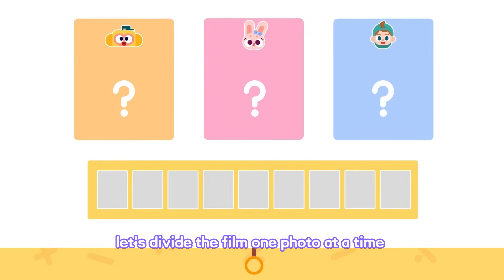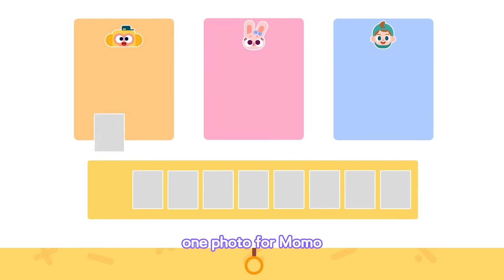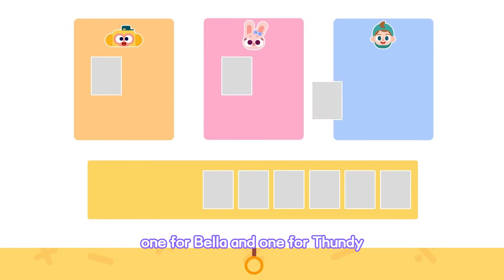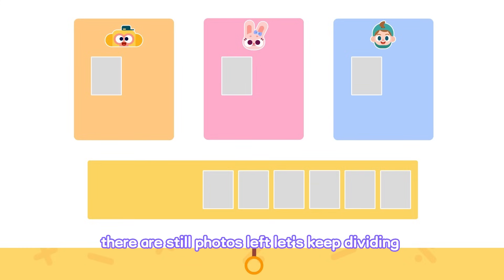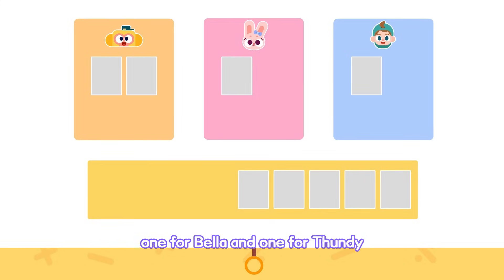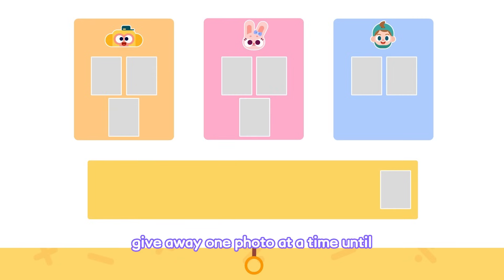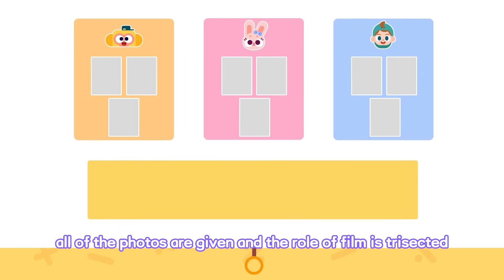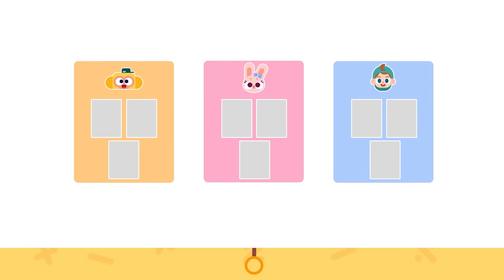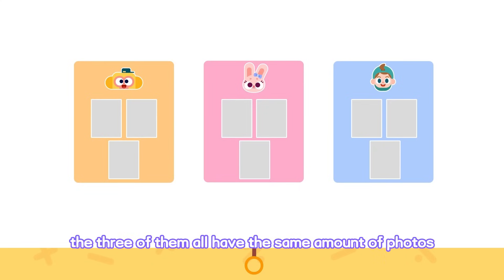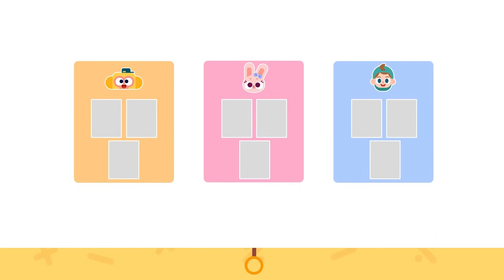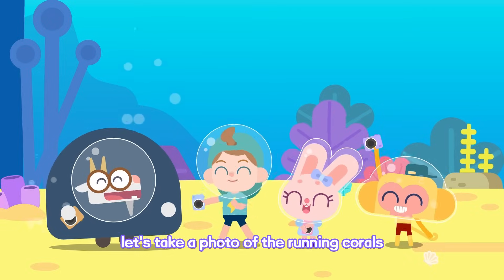Let's divide the film one photo at a time. One photo for Momo, one for Bella, and one for Thundee. There are still photos left. Let's keep dividing. One for Momo, one for Bella, and one for Thundee. Almost done. Let's do it one more time. Give away one photo at a time until all of the photos are given and the roll of film is trisected. See? The three of them all have the same amount of photos. Give it a try. Let's take a photo of the running corals!